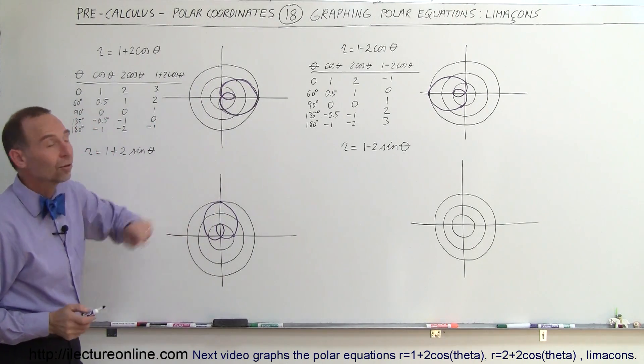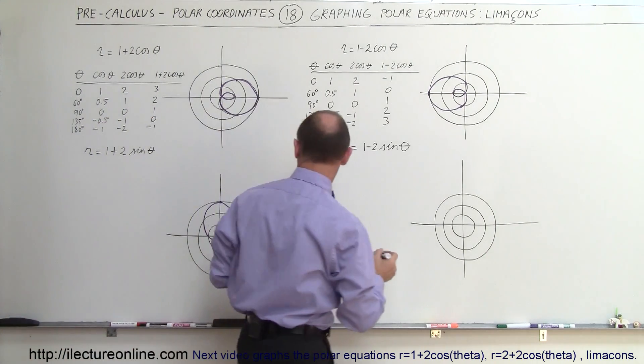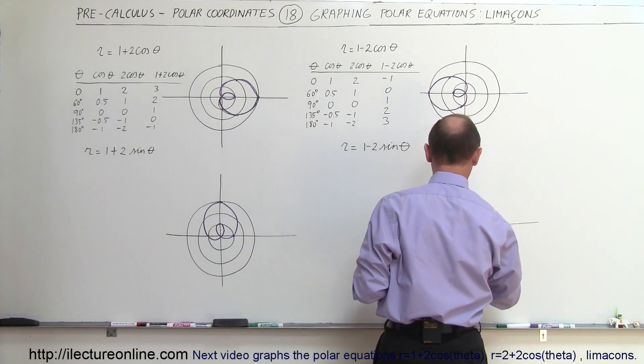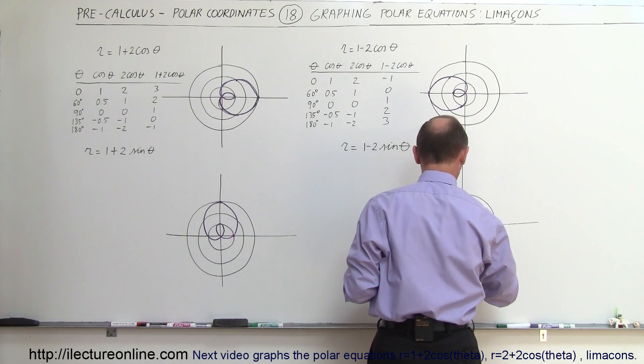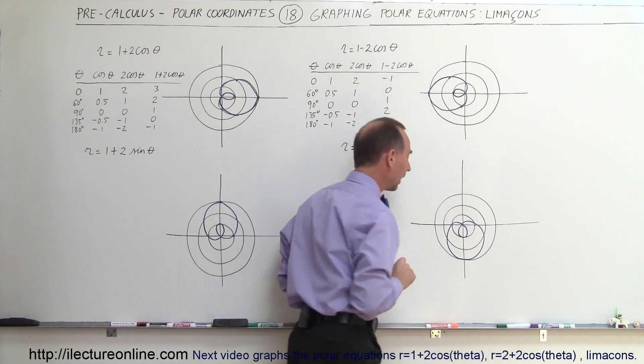And then finally, when we have 1 minus 2 times the sine of theta, it basically flips the whole thing over in the other direction. And so we'll get something that looks like this. Like that.